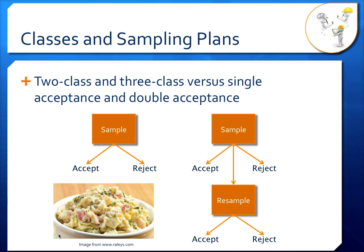How do we take these two- and three-class sampling plans and work them into our single, double, and multiple acceptance plans? A two-class plan is not the same thing as single acceptance, and a three-class plan is not the same thing as double acceptance — they work differently. The classes affect your judgment on each sample you take. What we've done so far with single and double acceptance sampling has assumed a two-class plan, where the sample either conforms or it doesn't.